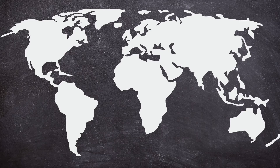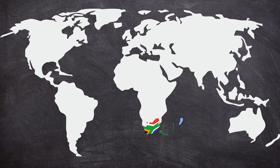Across the whole world we use two different decimal separators: a comma and a point. Because I'm from South Africa I use a comma as a decimal separator, so that is why you will mainly see me use a comma. But that is the only difference — the rules are the same, everything is the same.